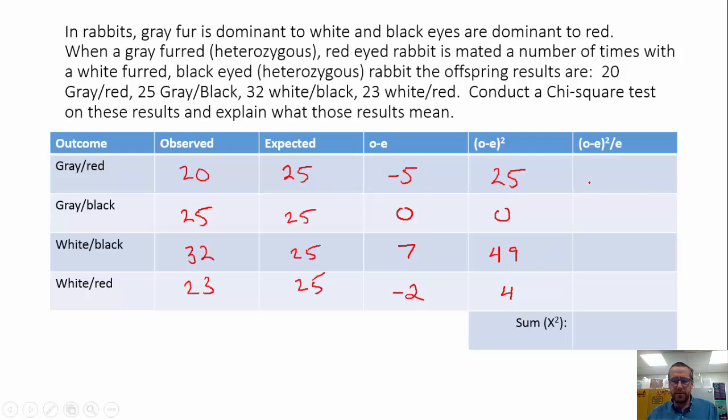Alright, so then I just need to do this last step. So 25 divided by 25, that's 1. 0, and then I just do 49 divided by 25 is 1.96.